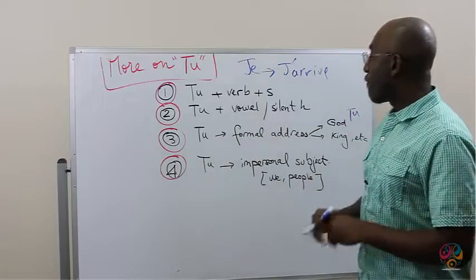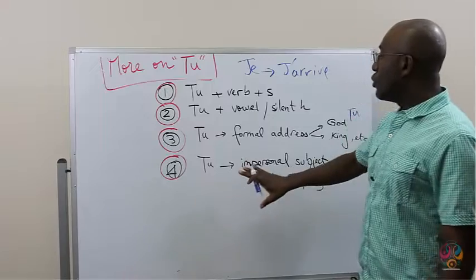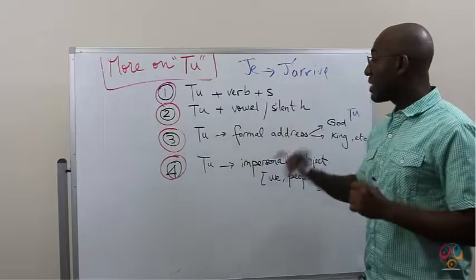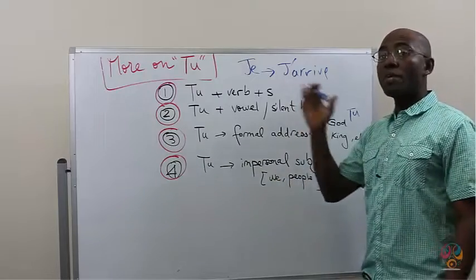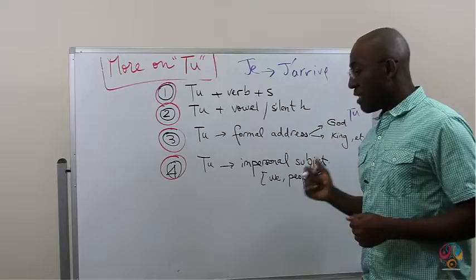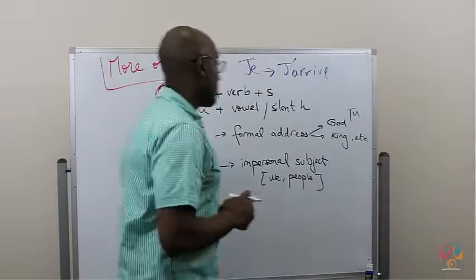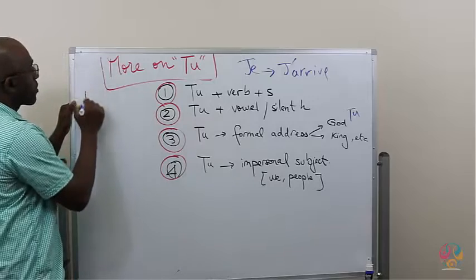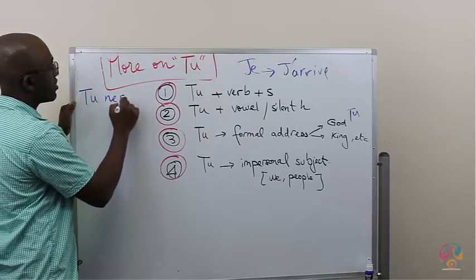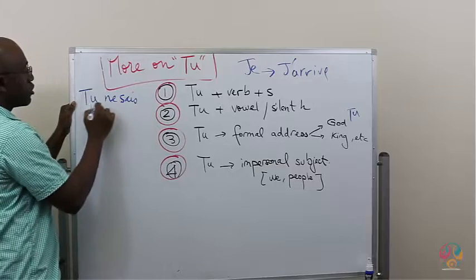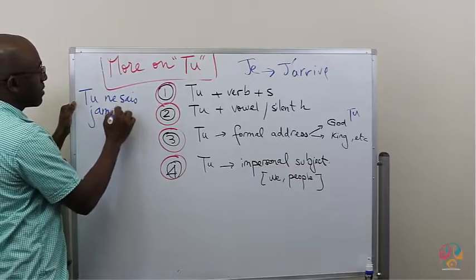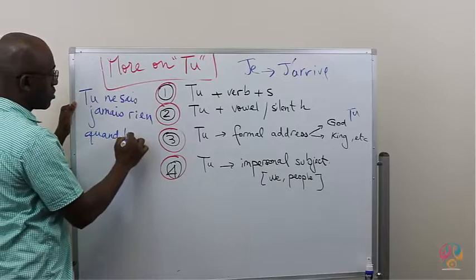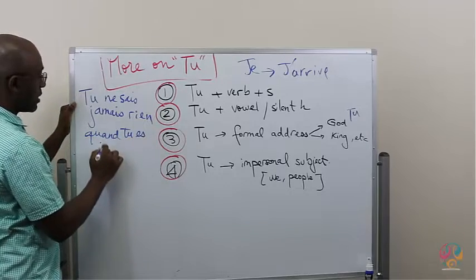And number four, TU can be used as an impersonal or an indefinite subject. And TU, in that case, would mean WE or people in general. I'll give you an example.